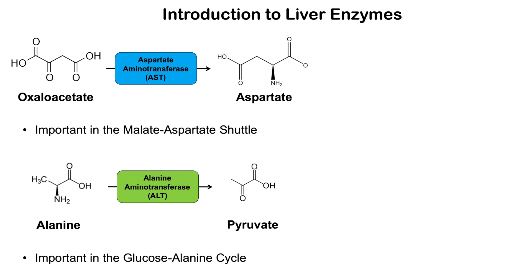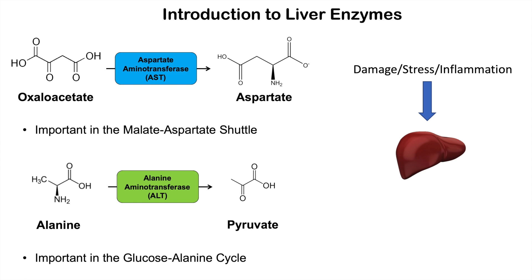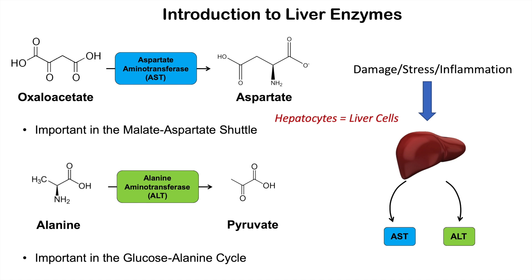So why are these called liver enzymes? These are both enzymes located in the liver. If there's any damage, stress, or inflammation affecting the liver, it can lead to damage to the hepatocytes, which can essentially dump AST and ALT into the blood where we can measure them. When we see elevations in AST and ALT, we use the term transaminitis.